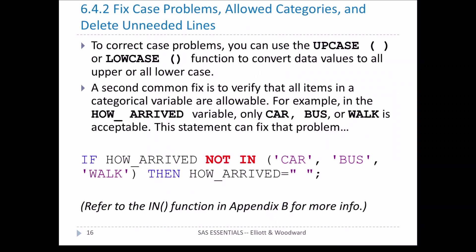Now let's talk about fixing case problems — that is, uppercase versus lowercase — along with allowed categories and deleting unneeded lines. To correct case problems, we can make everything uppercase or lowercase. For example, for male and female values that are sometimes uppercase and sometimes lowercase, we change them all to uppercase. Similarly for the 'how did you arrive' variable with values car, bus, and walk.